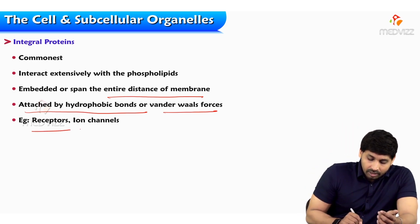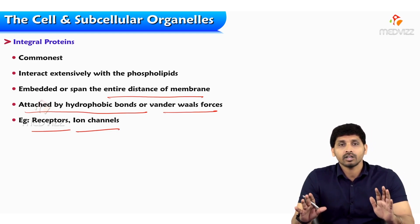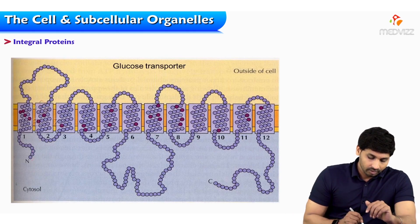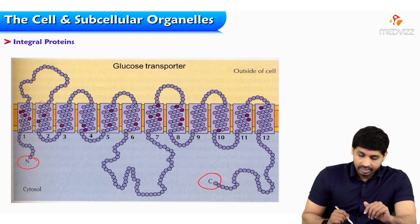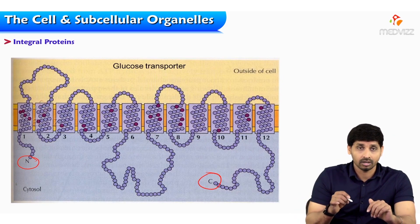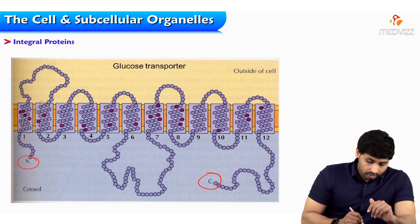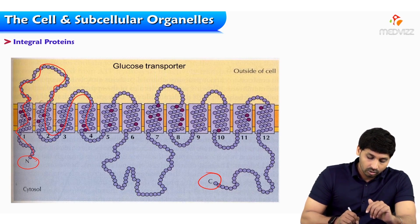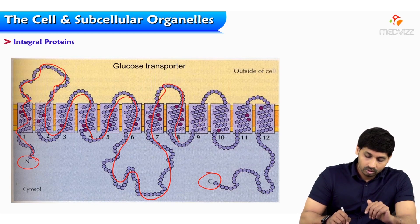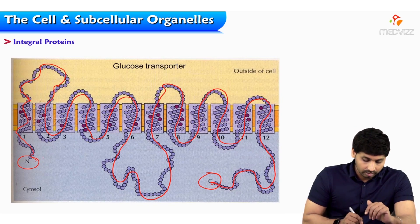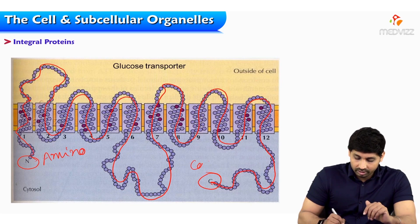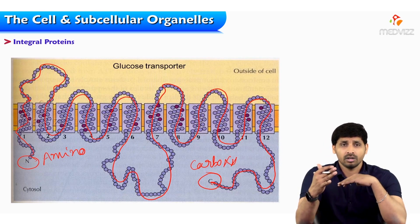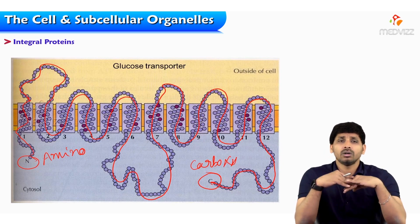Integral proteins act as receptors or ion channels, providing communication from inside to outside of the cell. You can see here how integral proteins span from the N-terminal through the membrane to the C-terminal — spanning throughout the cell membrane and going inside again, coming outside. Any protein has two terminals: the amino terminal end and the carboxy terminal end. This gives better communication from inside to outside, which is why integral proteins are more common compared with peripheral proteins.